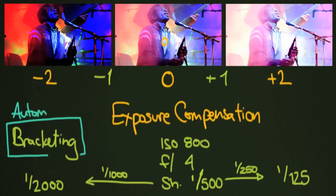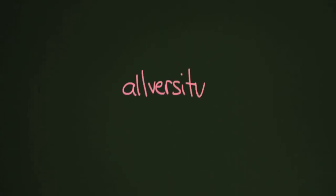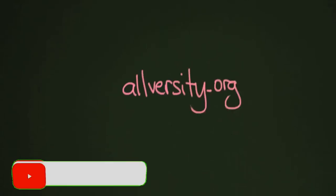I'd kind of not recommend automatic bracketing unless you know exactly what you're doing — you could use it for HDR photography or situations where you really need a good exposure, but in general it just gets in the way and you end up with a lot more photos to deal with. I'd say if you do any bracketing, just do it while you're shooting: find your spot, pay attention to your light meter, and do your best to get the correct exposure. That's a little bit about bracketing — I hope it helps. Come back and check out more lessons at allversity.org.